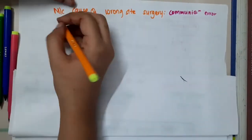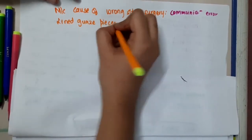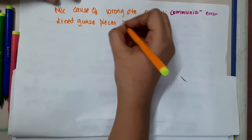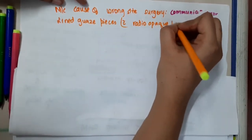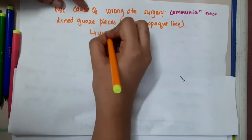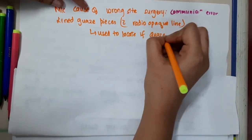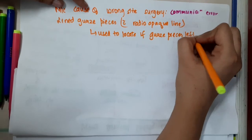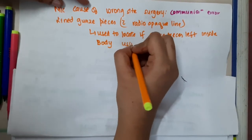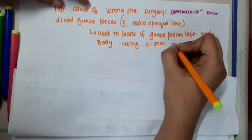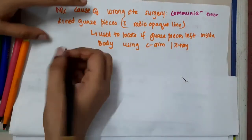Lined gauze pieces are gauze pieces lined with a radio-opaque line. This lining is done to locate gauze pieces if any are left inside the body. You can locate retained gauze pieces using an X-ray or CR.